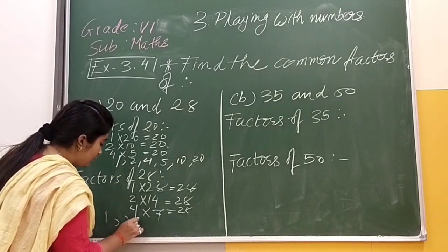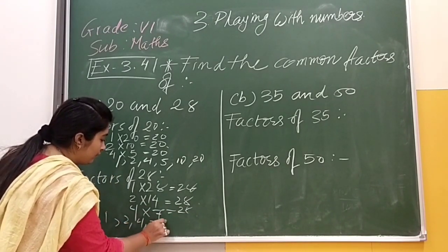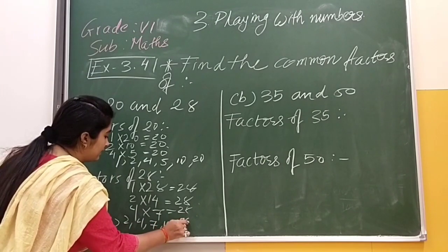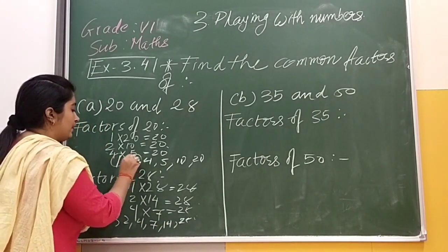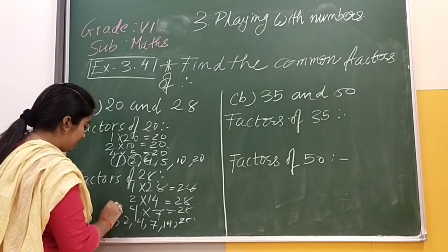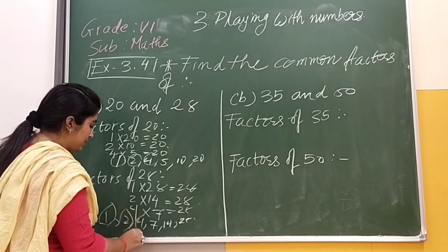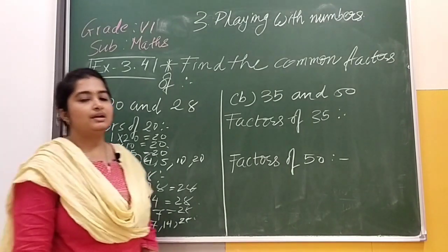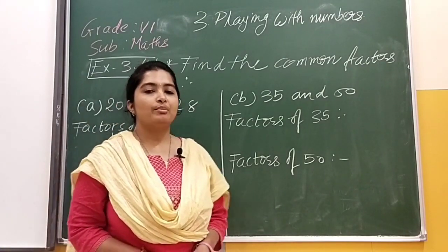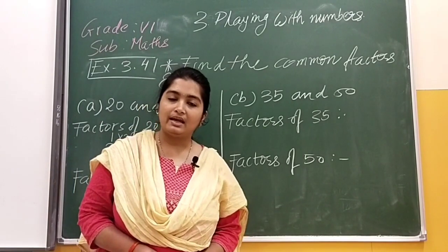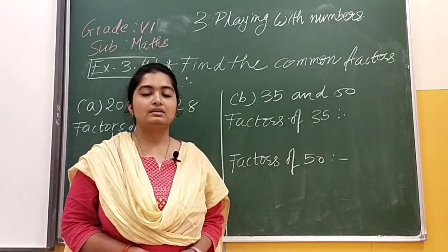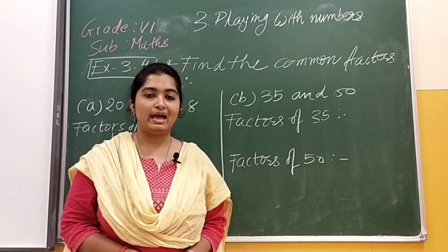1, 2, 4, 7, 14 and that is 28. We can say that 1, 2 and 4 are common factors of our number 20 and 28. 20 and 28 common factors. 3 are common factors. That is 1, 2 and 4.